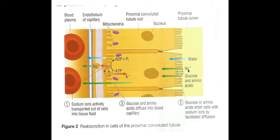Because sodium has been actively transported out into the blood, it's replaced by sodium moving from the glomerular filtrate within the proximal convoluted tubule into the cells lining the tubule wall by facilitated diffusion. This occurs together with glucose or an amino acid — a process called co-transport. Co-transport uses a protein, so it is facilitated diffusion, but sodium moves in alongside glucose or an amino acid simultaneously. As these substances move, water potential is lowered, so water also moves by osmosis into the cells.